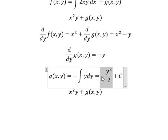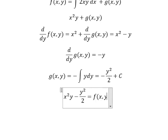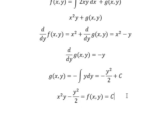So we simplify this and we get x²y minus y²/2 equals f(x,y) equals C. This is the final solution. Thank you for watching.